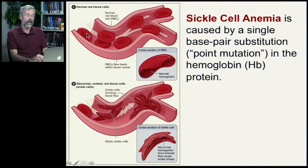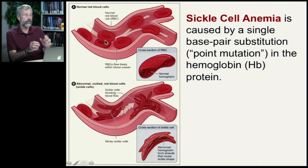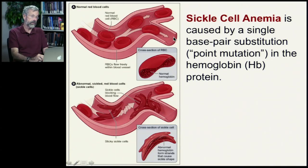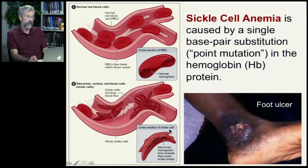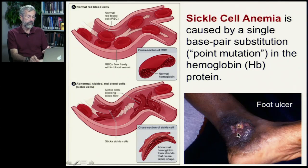Normal red blood cells are hockey puck shaped and flow through our circulatory system quite well — they can squeeze through tight spots and turn corners. But these sickle-shaped red cells can cause traffic jams; they block up so you don't get proper circulation to all parts of the body. This can lead to really serious problems like foot ulcers and other physical health issues.